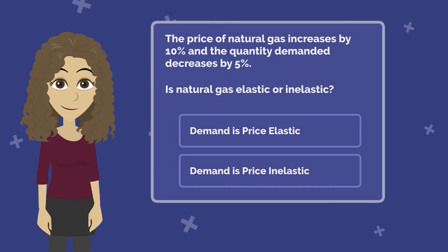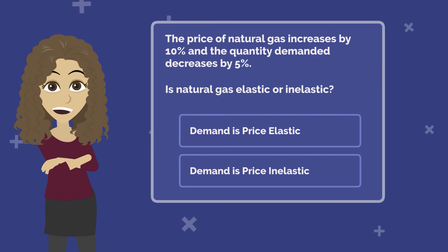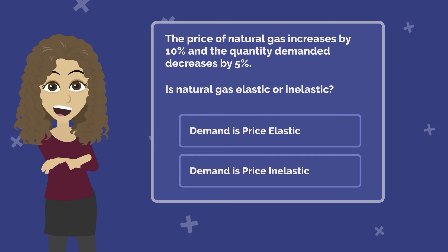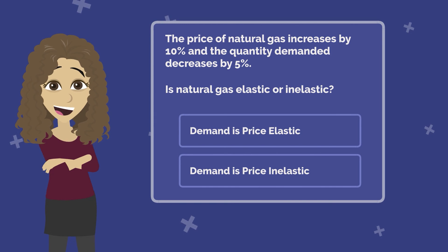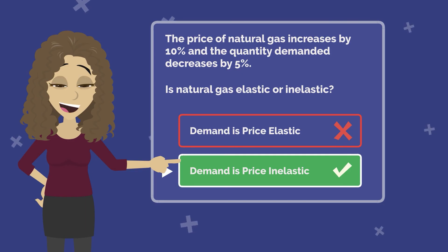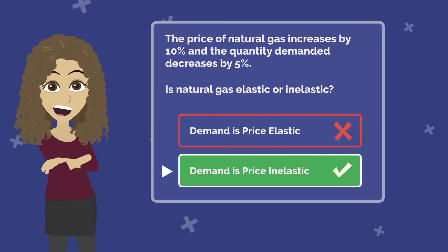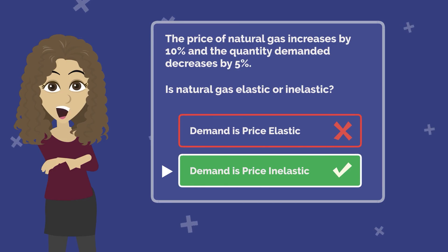Number 2: If the price of natural gas increases by 10 percent and the quantity demanded decreases by 5 percent, is natural gas elastic or inelastic? The answer is demand is price inelastic. Why? The percent change in quantity demanded is less than the percent change in price — demand is not very stretchy.